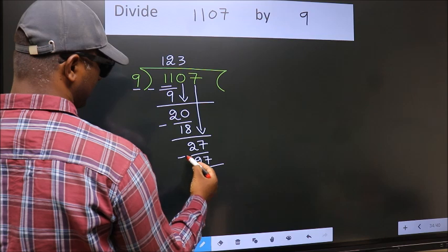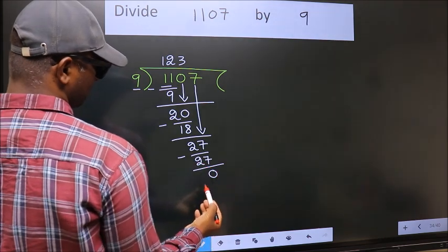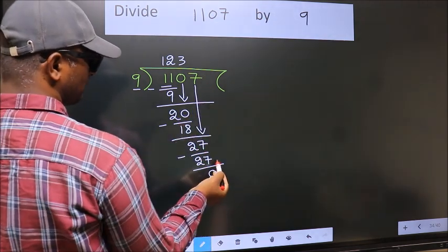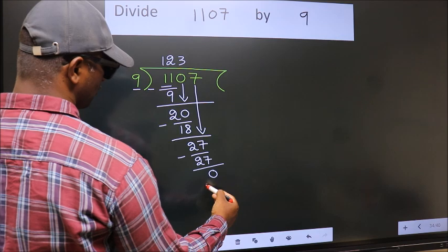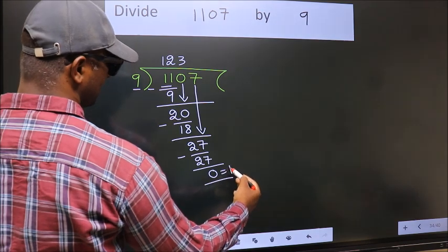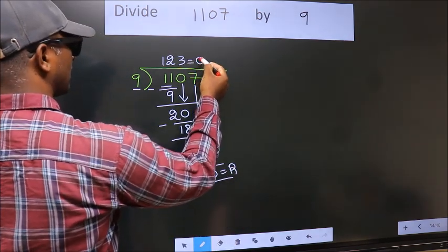Now we subtract. We get 0. No more numbers to bring down, so we stop here. This is our remainder. This is our quotient.